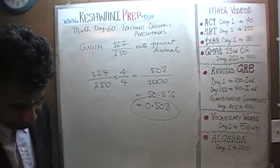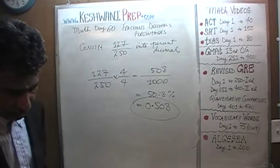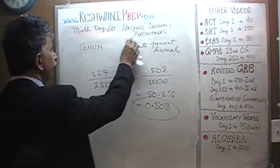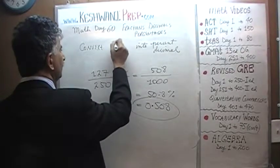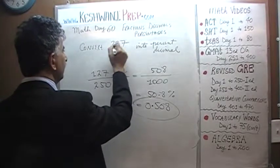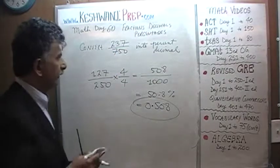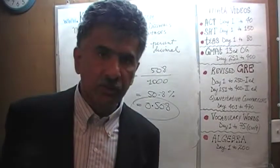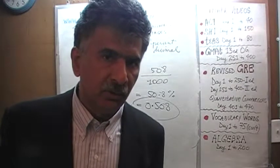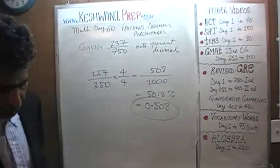Let's do one more. The next problem is 237 over 750 — you do it yourself. Pause the video, do the problem yourself, then compare your work against what we'll do together in a few seconds.